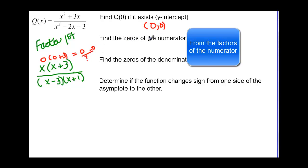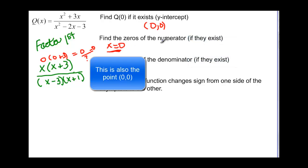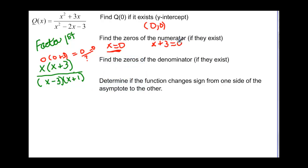Now we want to find the zeros of the numerator. That means x = 0 is one zero, which we already found from the y-intercept. It also means x + 3 = 0, giving x = −3. So our two zeros are at x = 0 and x = −3.